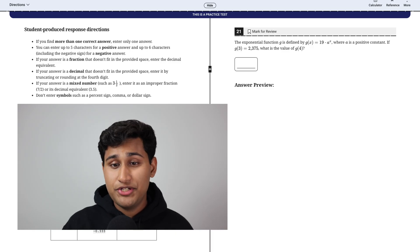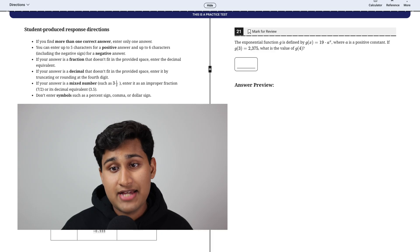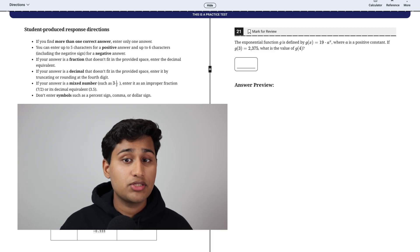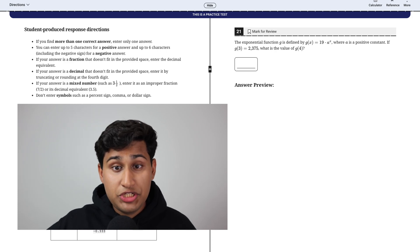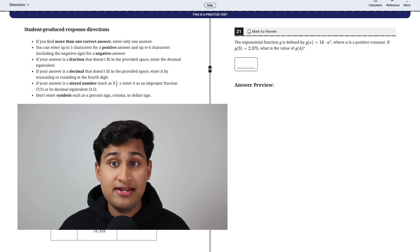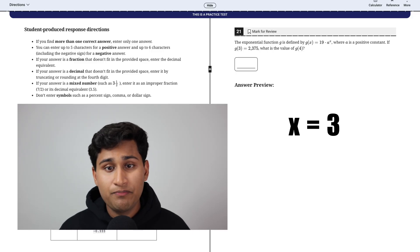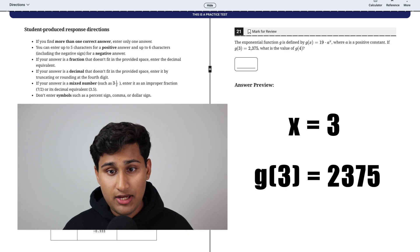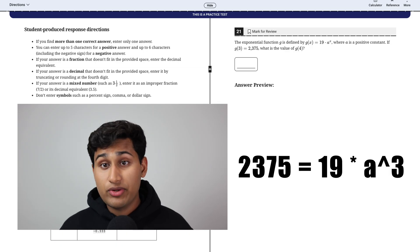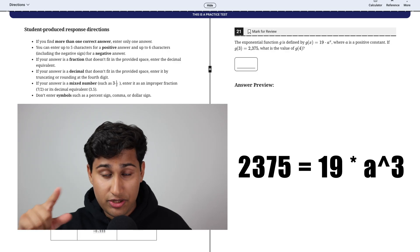The next type of problem is non-linear systems. And my tip for these is to just use more basic algebra. In this problem, we have 19 times A to the X where A is a positive constant and G of three equals 2,375. It's asking what is G of four? Here we're going to use G of three and the 19 times A to the X, and we're going to combine those. So we're going to use three as X and we're going to use G of three, which is 2,375.